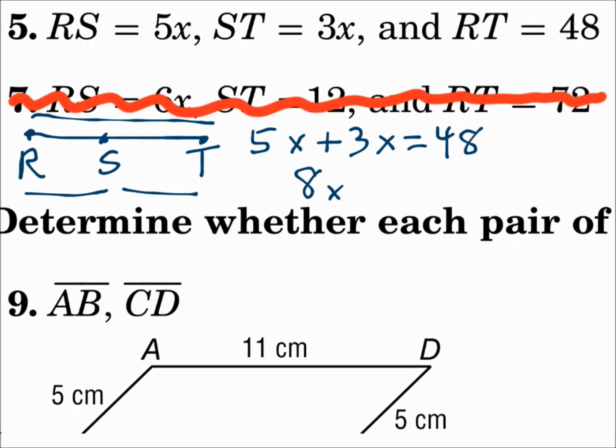So, 8X is 48. Divide by 8, and X is 6. That's your first answer. RS is 5X, and X is 6. So, RS is 30. Add up the parts to equal the whole thing.